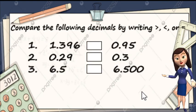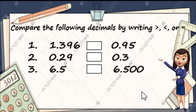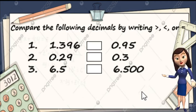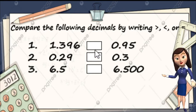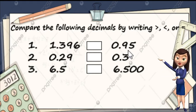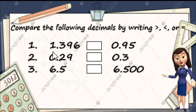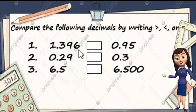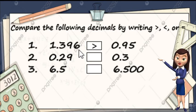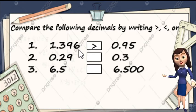Let's compare the following decimals by writing greater than, less than, or equal. Number one: we have 1 and 396 thousandths, and then 95 hundredths. So ang una nating titignan yung whole number part. We have here 1, and the other is 0. So ibig sabihin, mas malaki itong 1 and 396 thousandths. So 1 and 396 thousandths is greater than 95 hundredths.